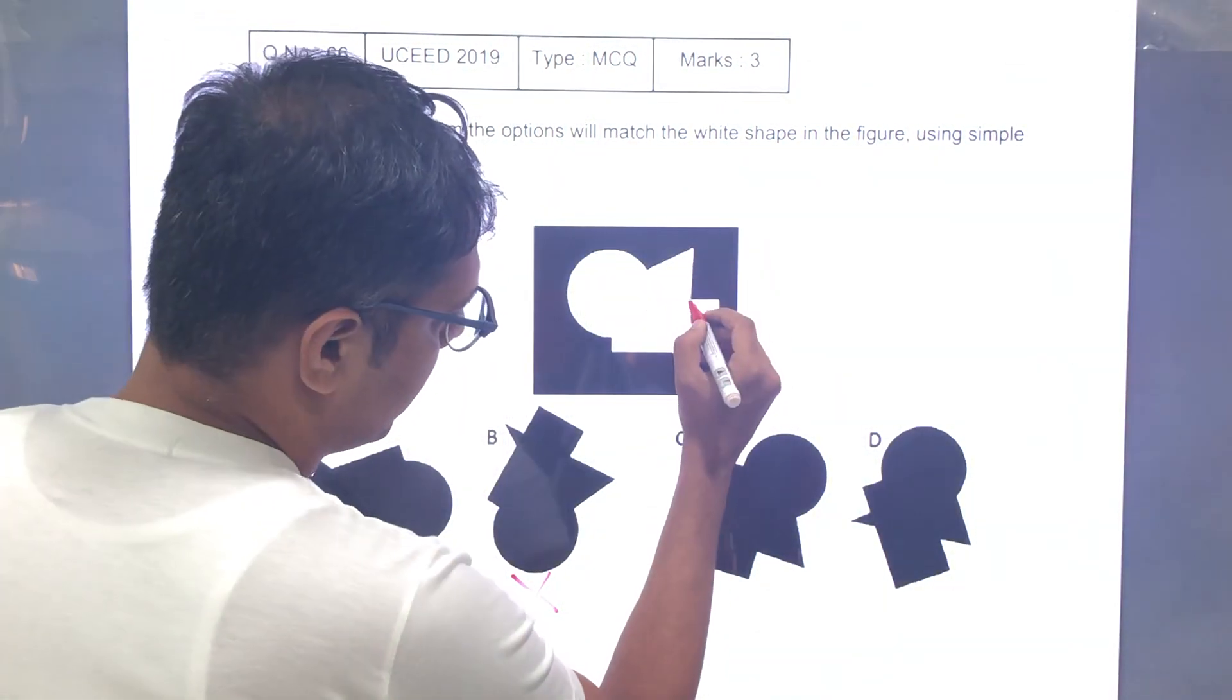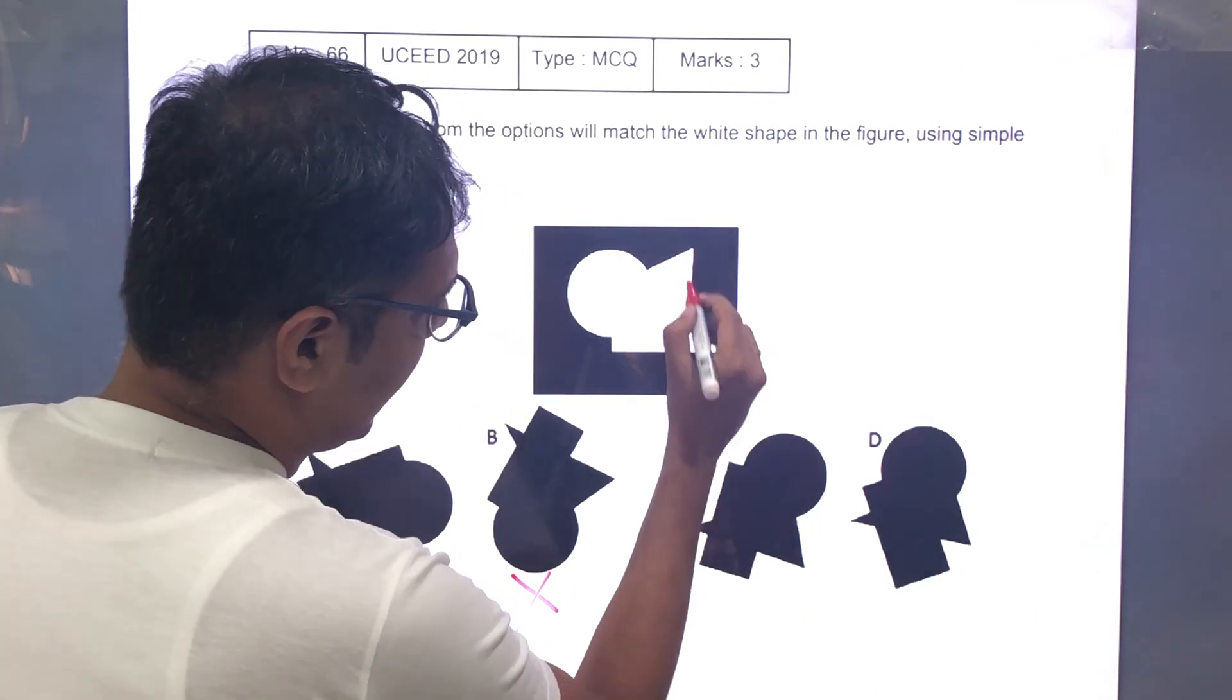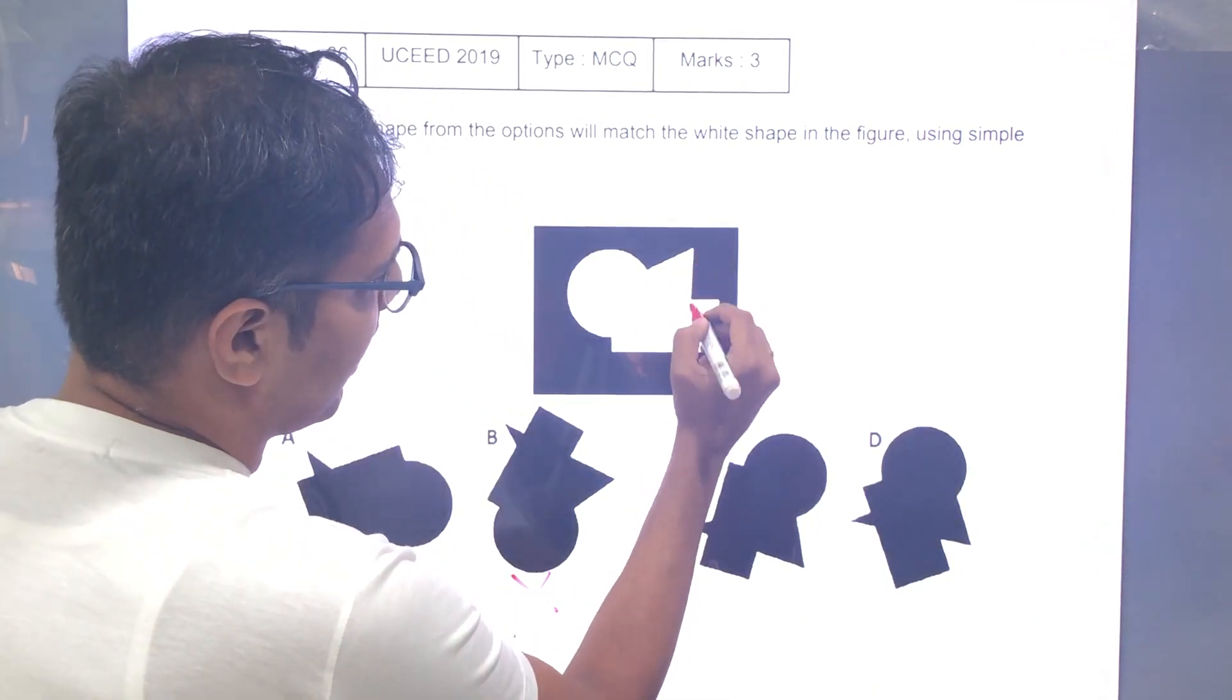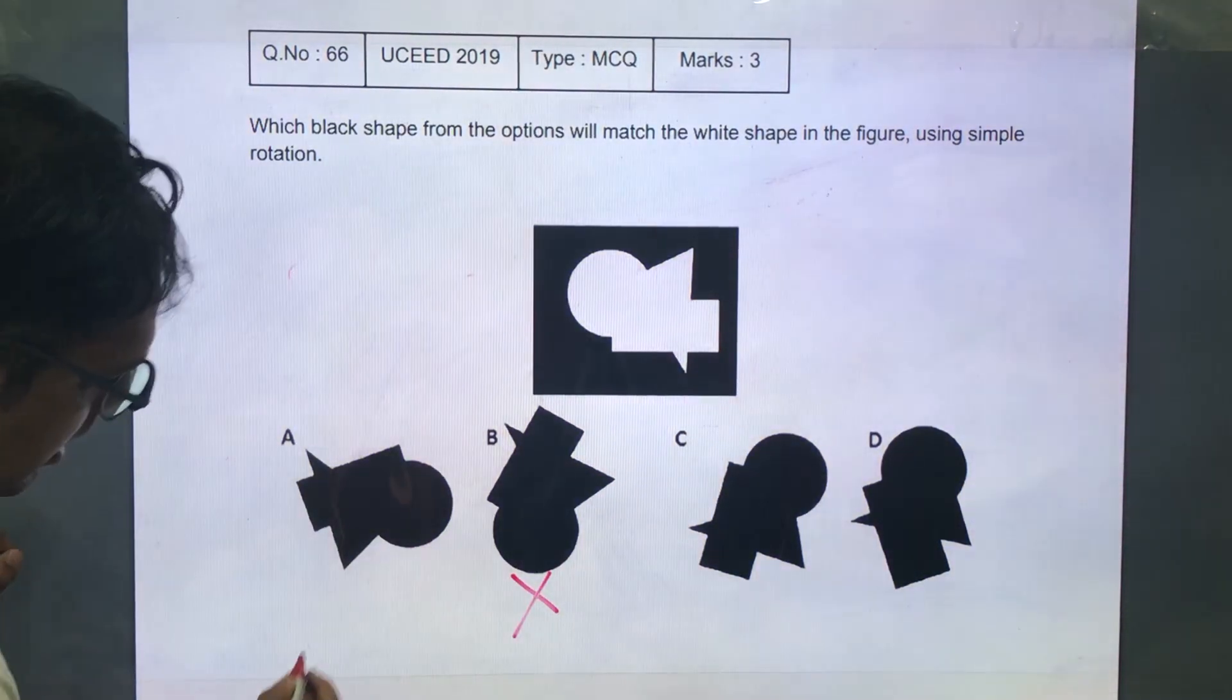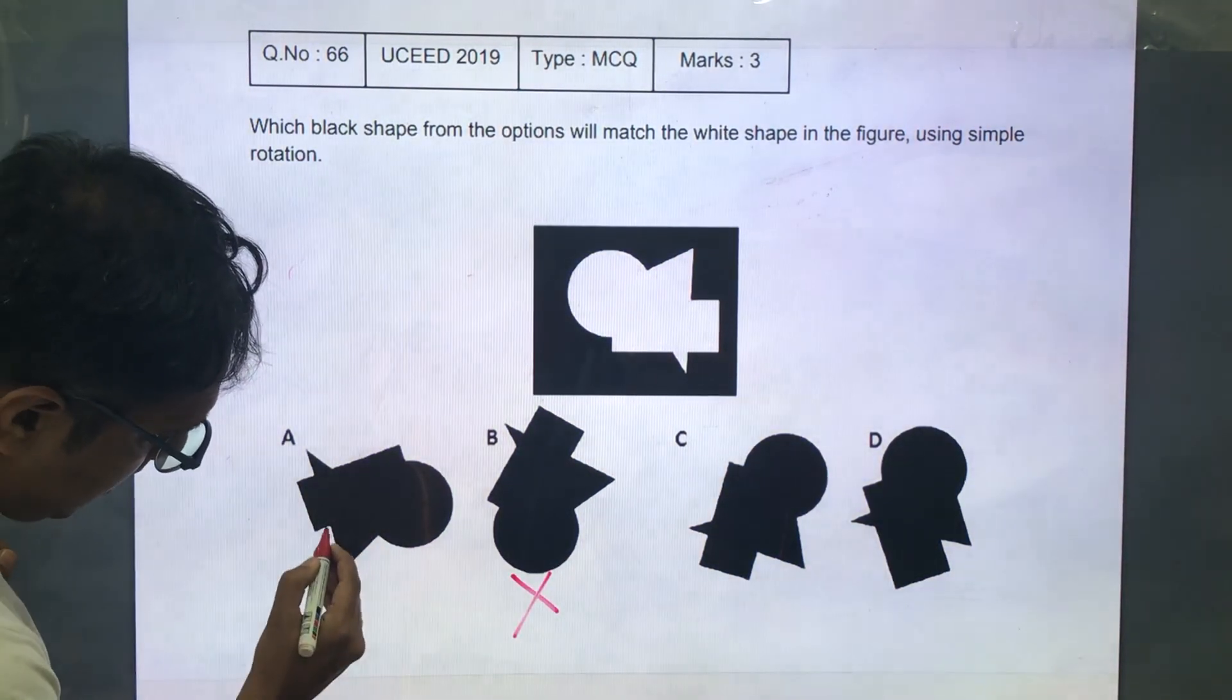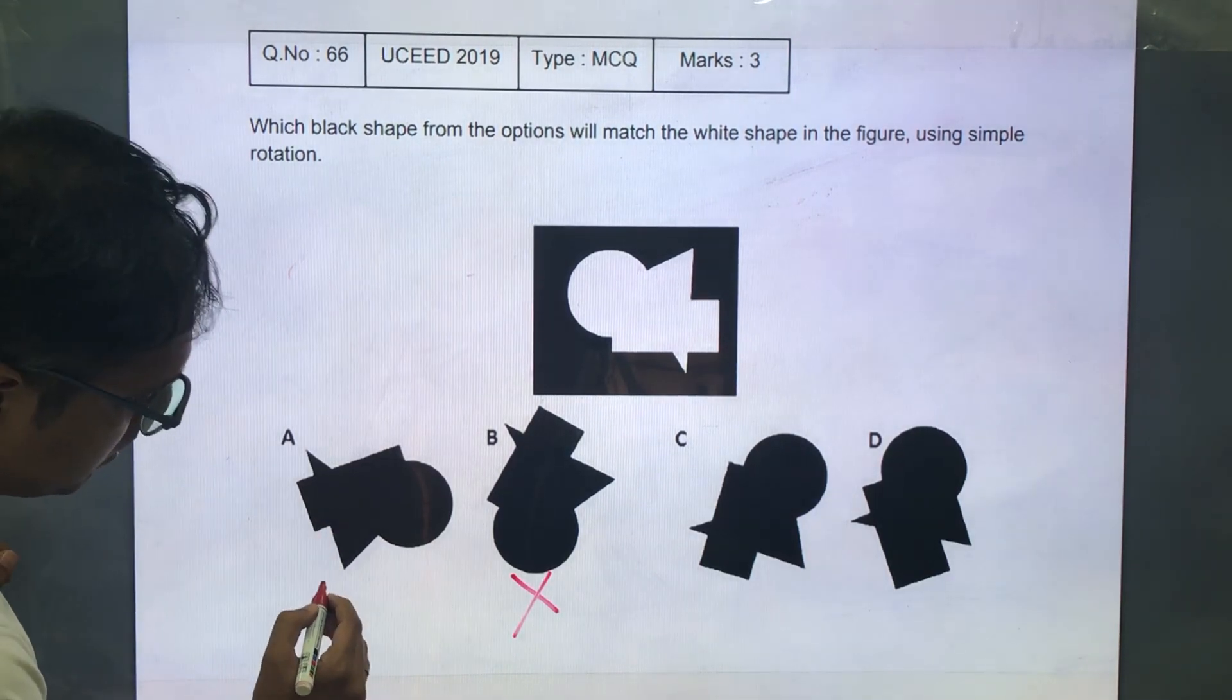So after the triangle if you see there is a rectangular shape which is at right angles to this triangular shape. Let's see if we can see that. So we see here there is a rectangular shape at right angle with the triangle. So this is still an option.